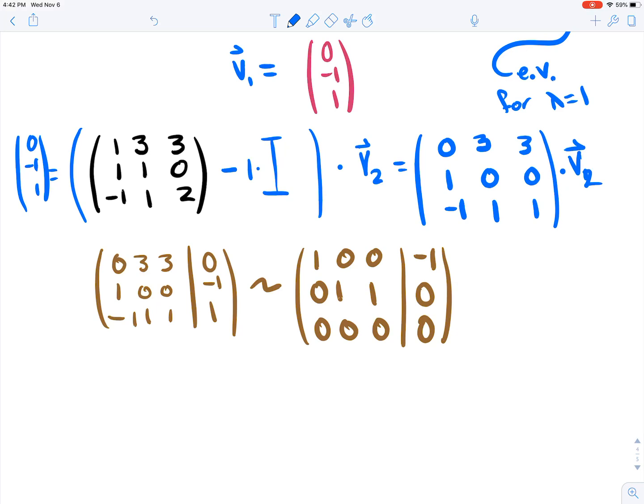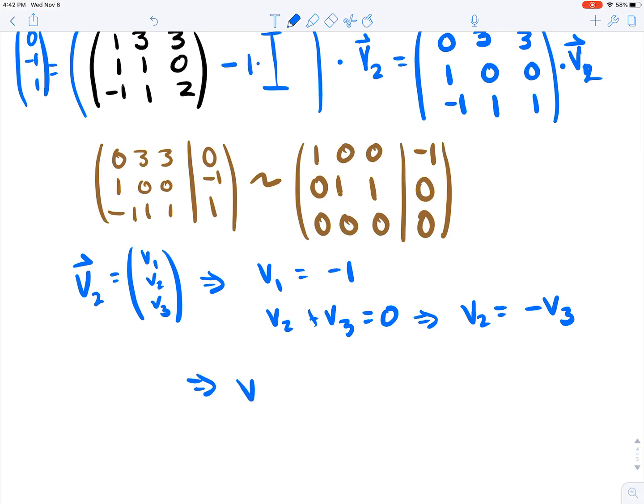So then this tells you that if you let v2 be the vector (v1, v2, v3), but those are its components, then what we're going to get is that v1 equals -1, v2 plus v3 equals 0, therefore v2 equals -v3. Therefore v2 is going to be of the form (-1, -v3, v3). You go ahead and pick your favorite v3. So let's just pick v3 equals 1. And what we're going to get is (-1, -1, 1). And this is what v2 is.